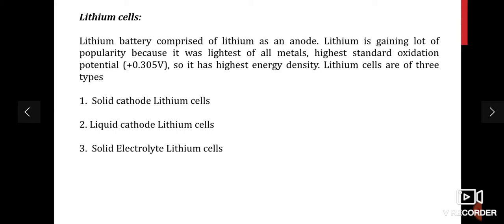Coming to lithium cells: first we will see the primary battery lithium cell. Lithium batteries use lithium as the anode. Lithium is gaining popularity because it is the lightest of all metals and has the highest standard oxidation potential of 3.05 volts, giving it the highest energy density. Lithium cells are of three types: solid cathode lithium cells, liquid cathode lithium cells, and solid electrolyte lithium cells.